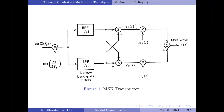These waves are first applied to a product modulator, which produces two phase-coherent sine waves at frequencies f1 and f2 respectively. These two sinusoidal waves are then separated from each other using two narrow-band filters. The bandpass filter in the upper branch is centered at f1, and the bandpass filter in the lower branch is centered at f2. The resulting filter outputs are then added to produce a pair of quadrature carriers, also called orthonormal basis functions.